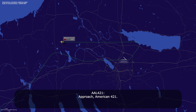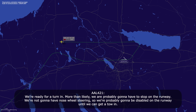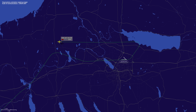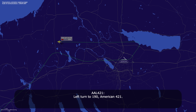Approach, American 421. American 421, we're ready for a turn in. More than likely we are probably going to have to stop on the runway — we're not going to have nose wheel steering, so we're probably going to be disabled on the runway until we can get a tow in. American 421, roger, turn left heading 190. American 421, left turn to 190, American 421.